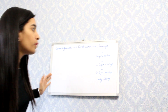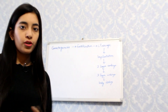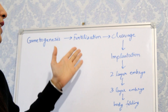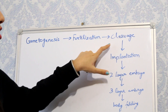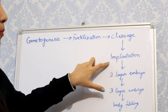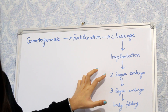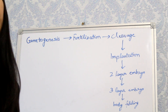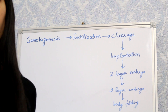This is the overview of how we'll discuss the embryology section. First we'll discuss gametogenesis, then fertilization, after that cleavage, then implantation, then how the two-layer embryo is formed, then the three-layer embryo, and then we'll discuss the folding of the body and how structures are formed.